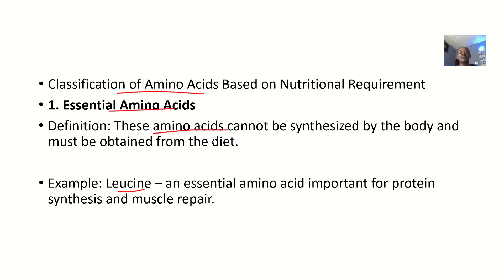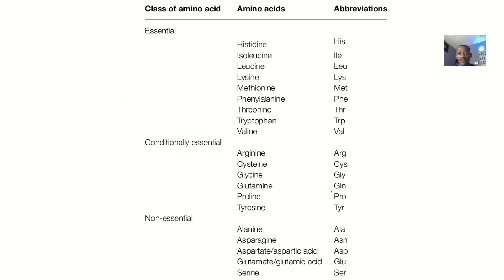An example of an essential amino acid is leucine, which is important for protein synthesis and muscle repair. Looking at the essential amino acids listed, you can see leucine highlighted. Take your time to look at the other examples by pausing the video.